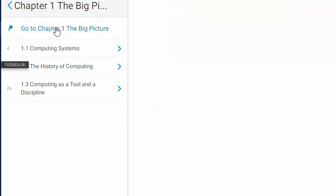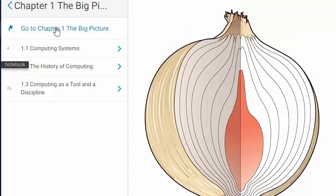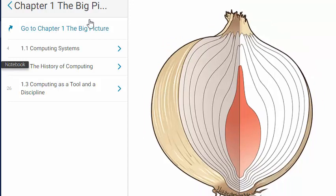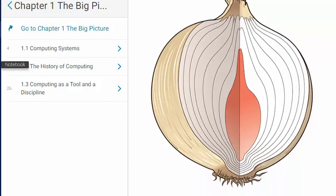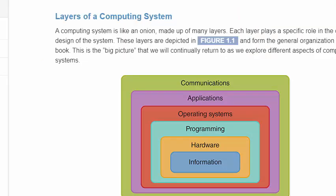Let's start by looking at the beginning of Chapter 1. You see a big onion, and this big onion is a metaphor for a computing system and learning computers. This textbook will take the approach of going through each layer of the computer and focusing on learning that. Figure 1-1 displays the layers that the author will cover, and we'll start with an overview today. Chapter 1 is called the big picture.